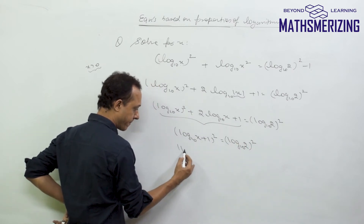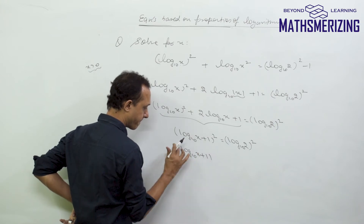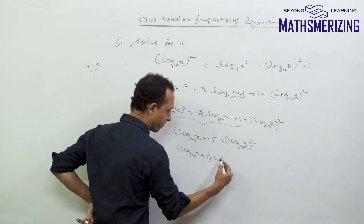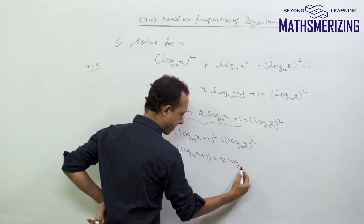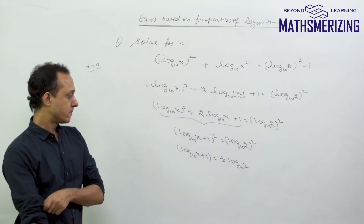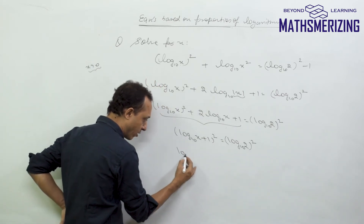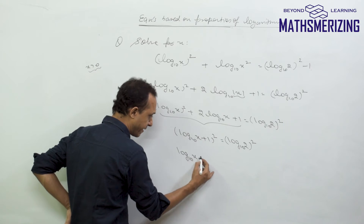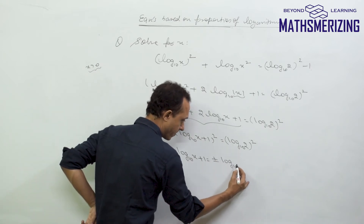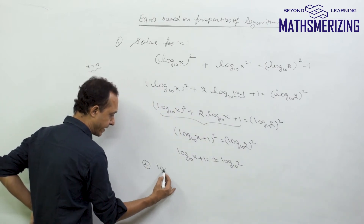Taking the square root, I can write log x (base 10) + 1 equals plus or minus log 10 (base 10), which simplifies to log x (base 10) + 1 equals plus or minus log 2 (base 10).